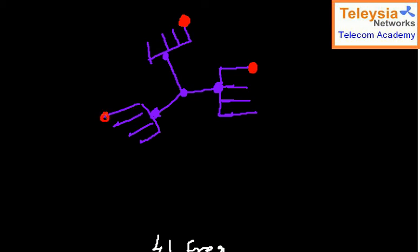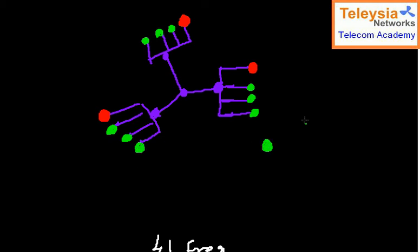Signaling responsibility will be covered in a later topic. One TRX is planned for the BCCH and another TRX is planned for the TCH. The different colors show the different layers — green shows the TCH layer for traffic, and red shows the BCCH layer. So the green TRX is the TCH TRX and the red TRX is the BCCH TRX.